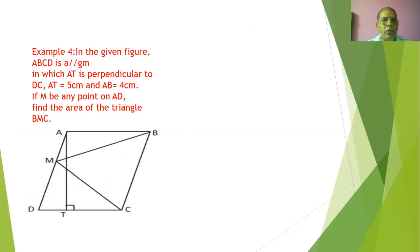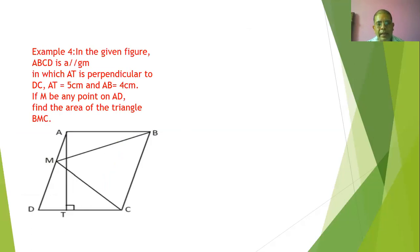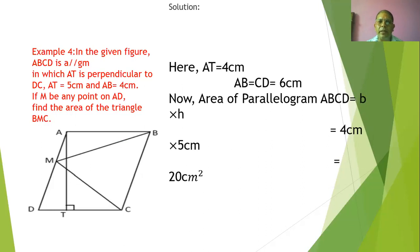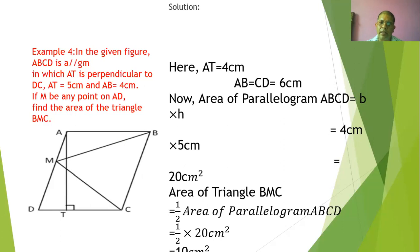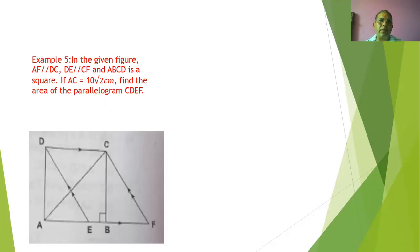Example number four: in parallelogram ABCD, CD = 5 cm and AB = 4 cm. M is any point on AD. Find the area of triangle BMC. First find the area of the parallelogram = base × height = 5 × 4 = 20 cm². Area of triangle BMC = 1/2 of parallelogram = 1/2 × 20 = 10 cm².